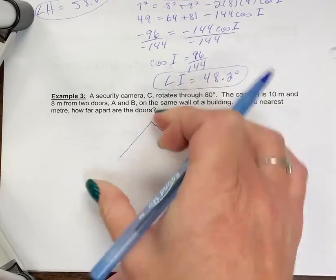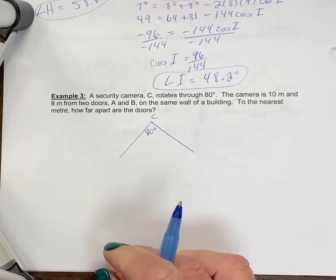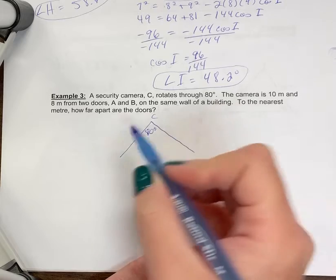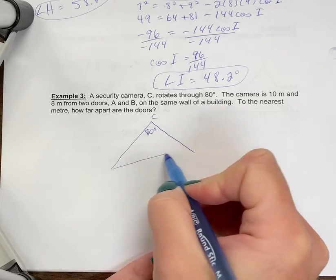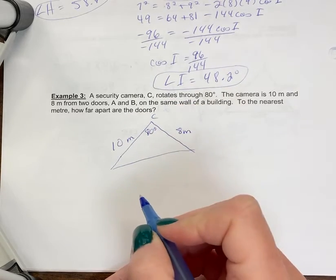You could have drawn this sideways too, that really doesn't matter. But as long as you have 80 degrees with C. We've got 10 meters and 8 meters. So I'm going to make this one a little longer here. So I'll put this as 10 meters, and this as 8 meters.